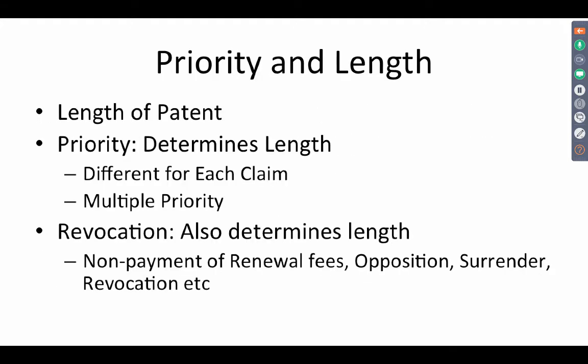Now, when we talk about priority, we talk about the term of the patent. Priority is related to the length of a patent. There is another issue called breadth, which is the scope or coverage of the claims — we will come to that later. The priority determines the length of the patent: the date on which you are going to claim your patent. If you file a complete specification for the first time and there is no earlier disclosure, your date of the patent is the date of filing the application — a very simple case with no complexity.